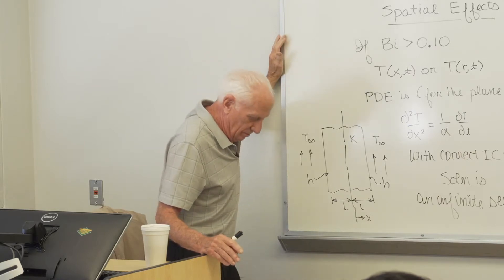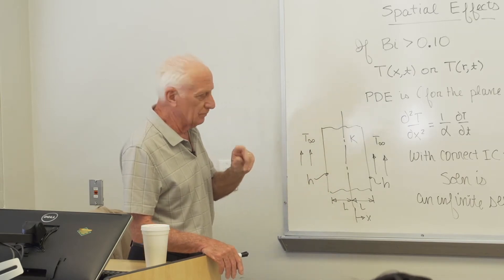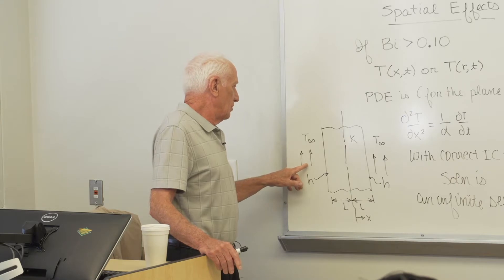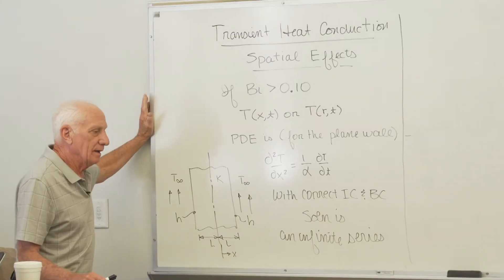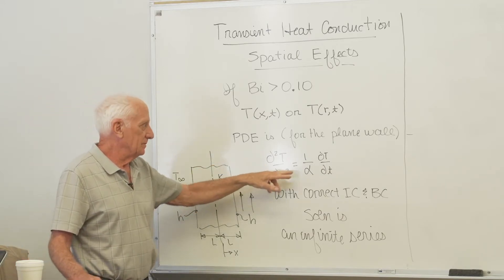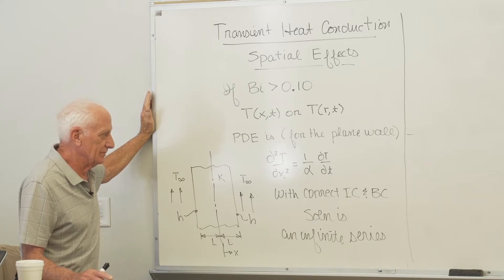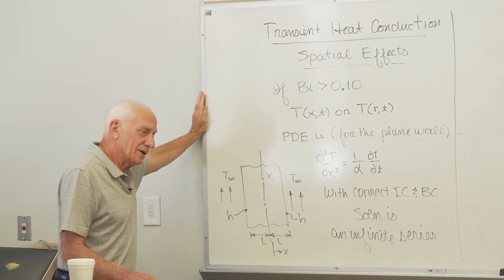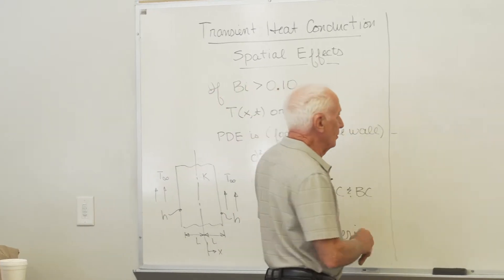If we look at a plane wall — its thickness is 2L, we measure X from the centerline at X equals 0 — there's a fluid blowing over the left and right-hand sides at temperature T-infinity. The convection coefficient on both sides is H. The correct partial differential equation is: partial squared T with respect to X equals 1 over alpha times partial T with respect to time. With correct initial and boundary conditions, the solution would be an infinite series, but we'll look at only a one-term approximation.